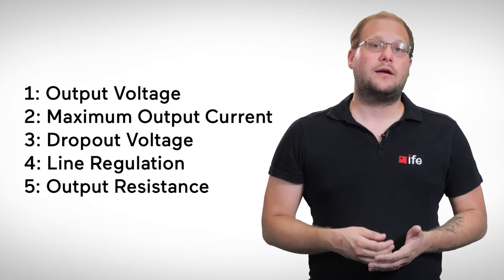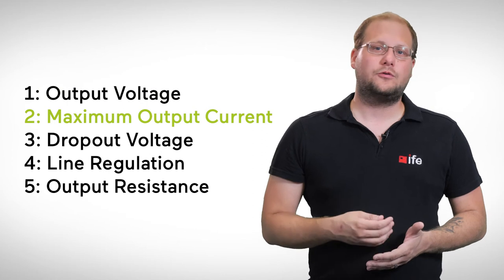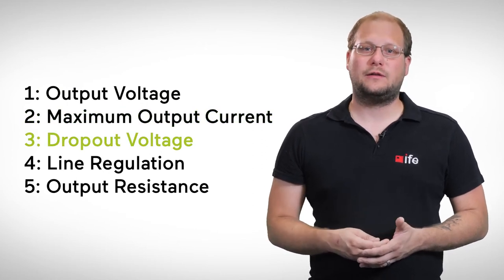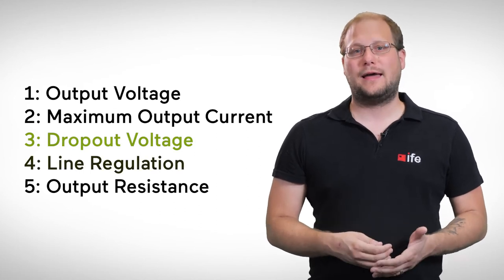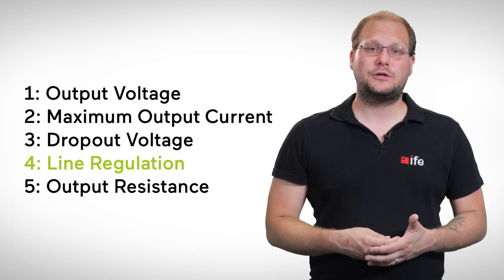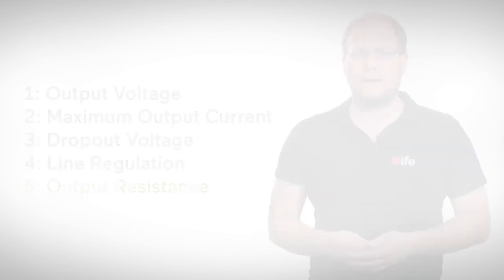Those parameters are output voltage, maximum output current, dropout voltage, which is the voltage that must be supplied to the regulator above its rated output voltage, line regulation, which is the ability to maintain a constant output voltage despite changes to the input voltage, and output resistance. If we want to use a linear voltage regulator for power applications, the series regulator is still widely used. As mentioned above, the regulator is in series with the load.